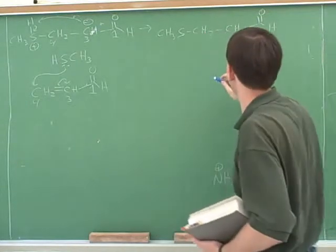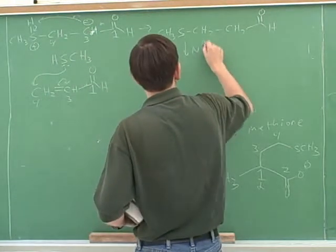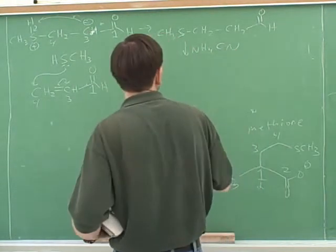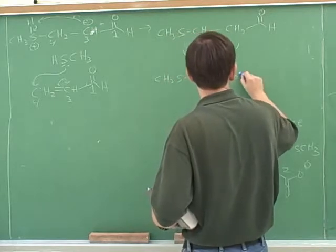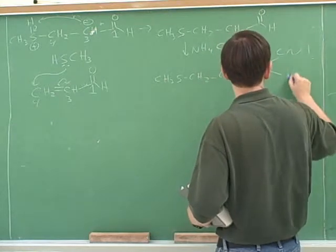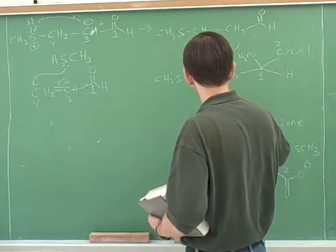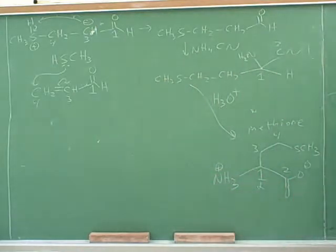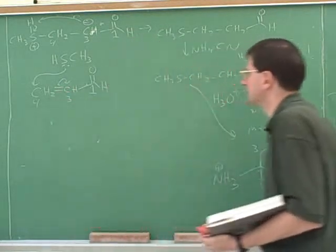All right, and then I think from this point on, you guys wouldn't have too much trouble. So next, we could add the ammonium cyanide. And then we could hydrolyze that under acidic or basic conditions. Okay, so the only tricky part here was forming out of the side chain to begin with.